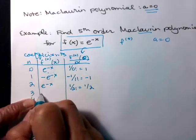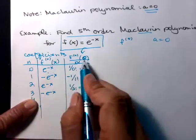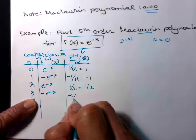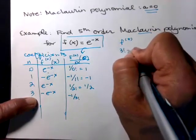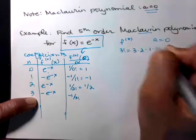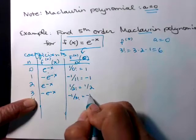Third derivative. The negative sign just comes back. So my numerator will be negative one over three factorial. Three factorial, three times two times one, six. So negative one sixth.